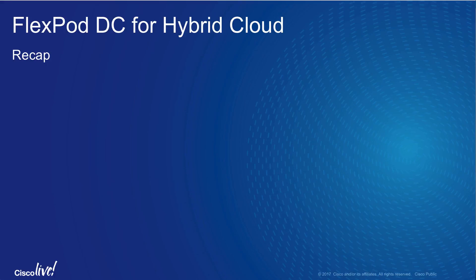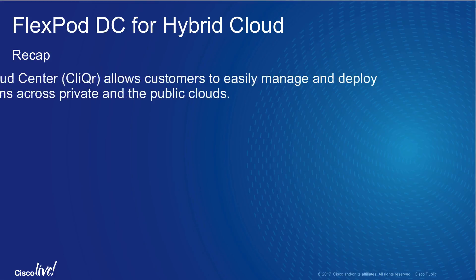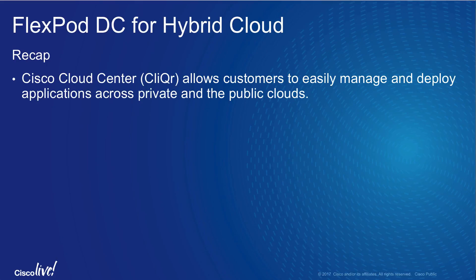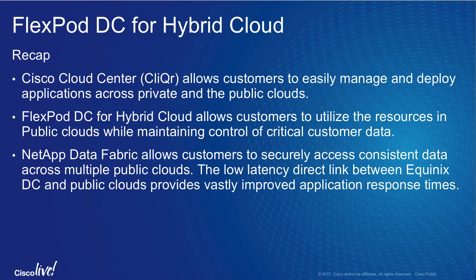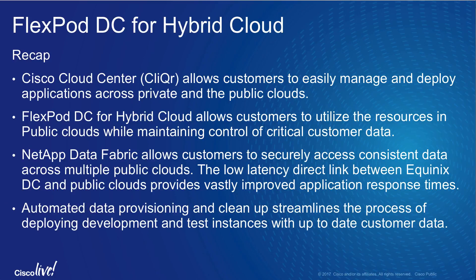Let's recap what we covered in this demonstration video. Cisco Cloud Center allows customers to easily manage and deploy applications across private and public clouds. FlexPod Data Center for hybrid cloud allows customers to utilize public cloud resources while maintaining control of critical customer data. NetApp Data Fabric allows customers to securely access consistent data across multiple public clouds. The low-latency direct link between Equinix Data Center and public clouds provides vastly improved application response times. Automated data provisioning and clean-up streamlines deploying development and test instances with up-to-date customer data.